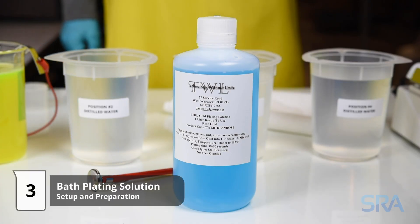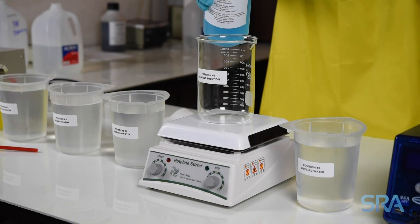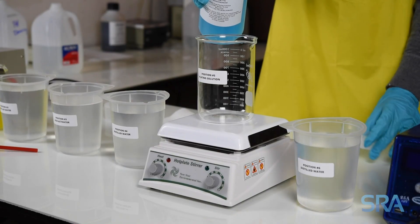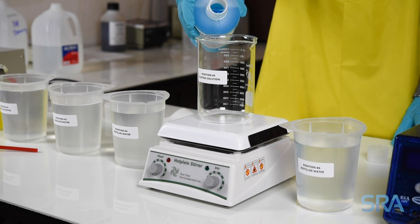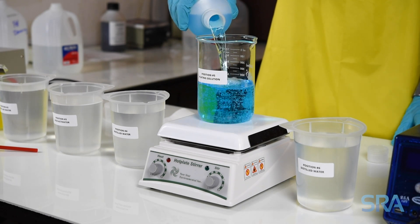The final step is setting up the precious metal bath for plating. In this example we are using a rose gold solution, but the same steps apply to any color. Start by pouring the plating solution into a one liter glass beaker.